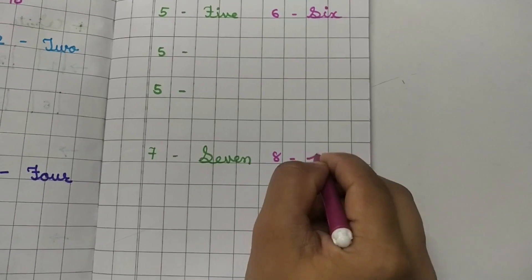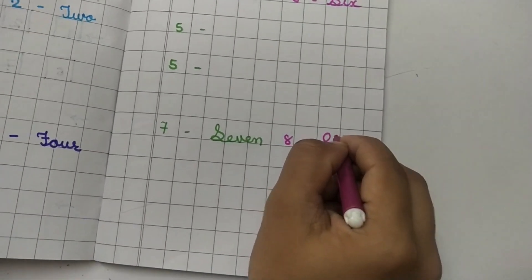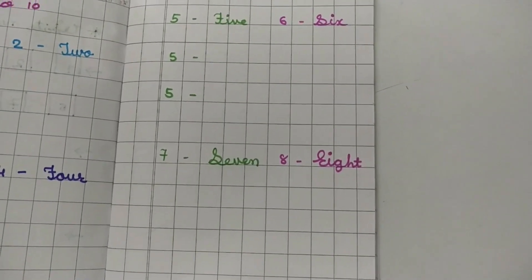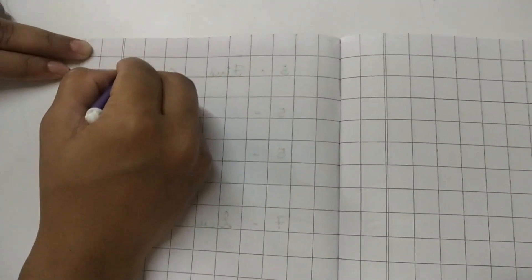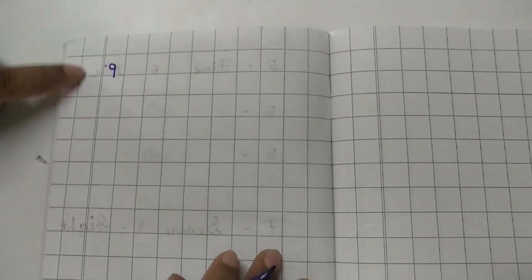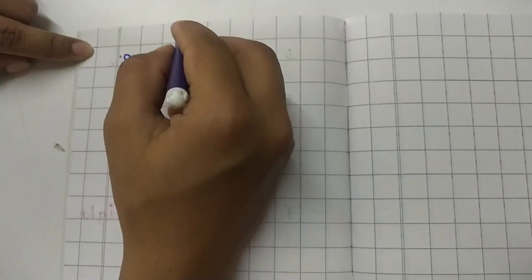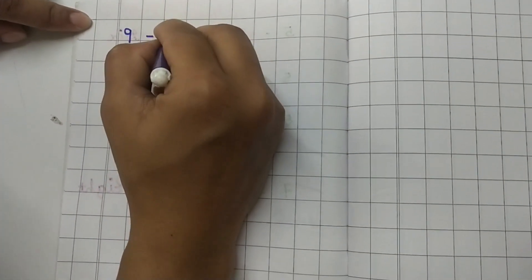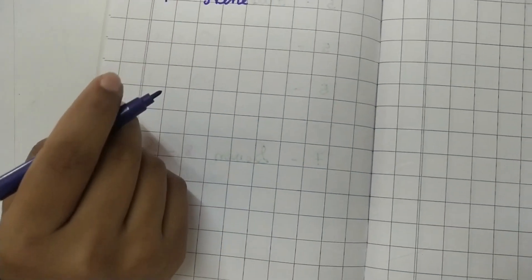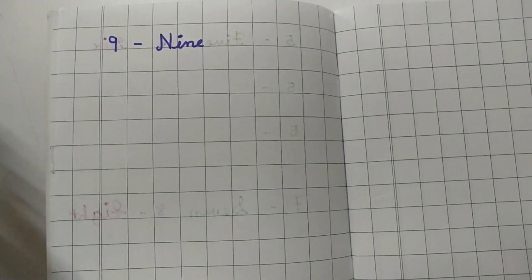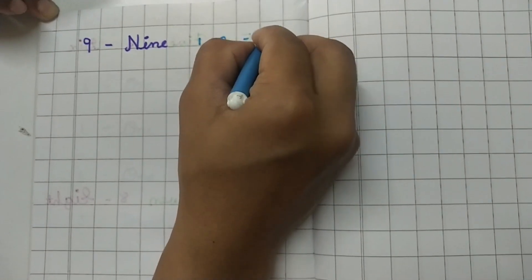After 7, write 8 — EIGHT — 8. After 8, number 9. Don't write in margin; after the margin you have to start writing. After 8, write 9 — NINE — 9. 3 times. And after 9, write 10 — TEN — 10.